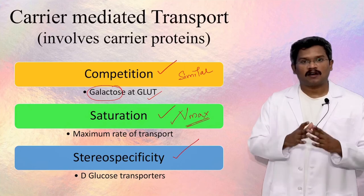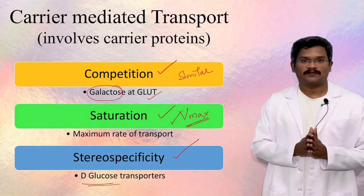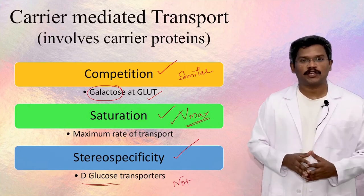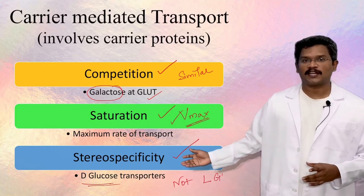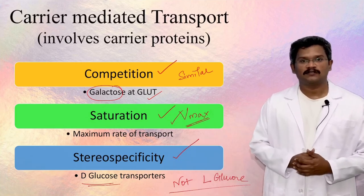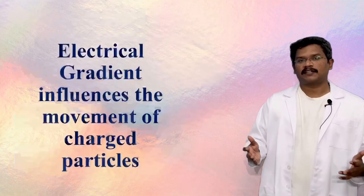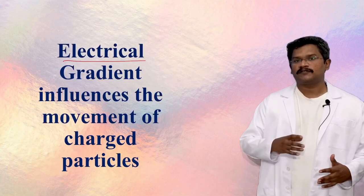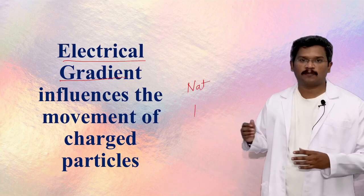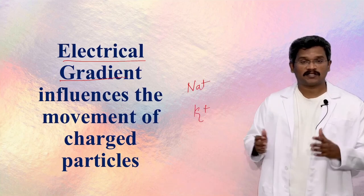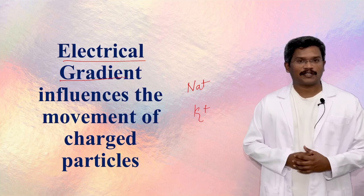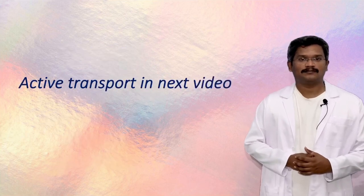Most carrier molecules are stereo specific — that is, they transport a specific stereoisomer of a molecule. For example, the glucose transporter transports only D-glucose. Apart from all the factors discussed, the rate of transport of a charged ion will also be influenced by the membrane potential. In the next class, we will discuss more about active transport. Thank you.